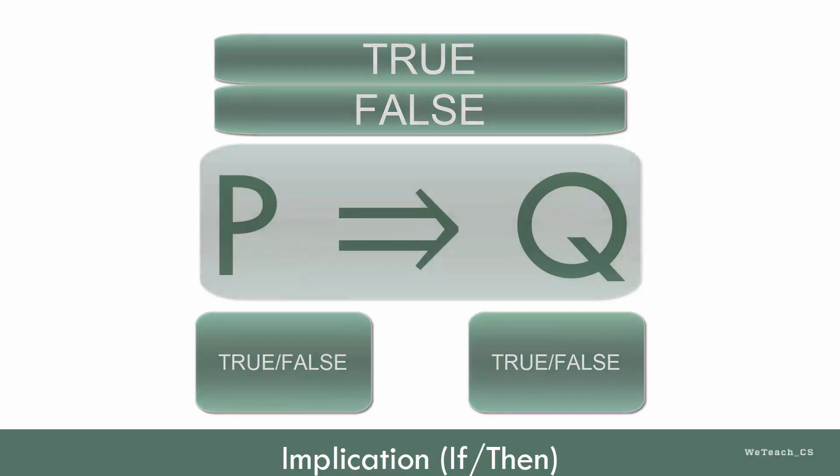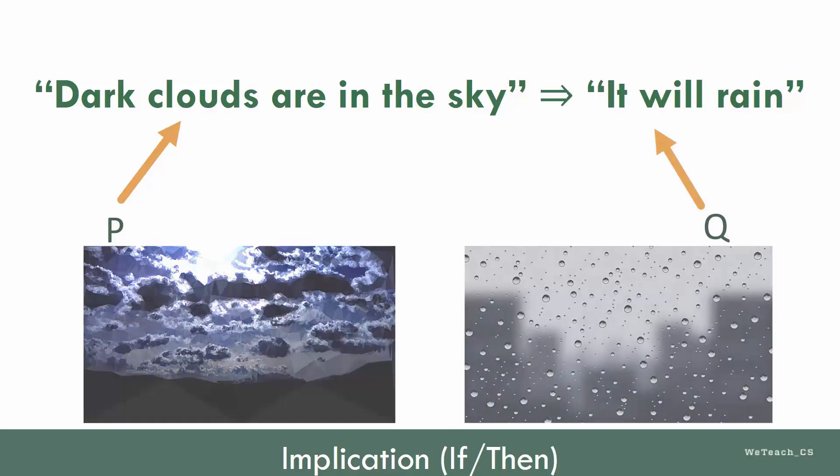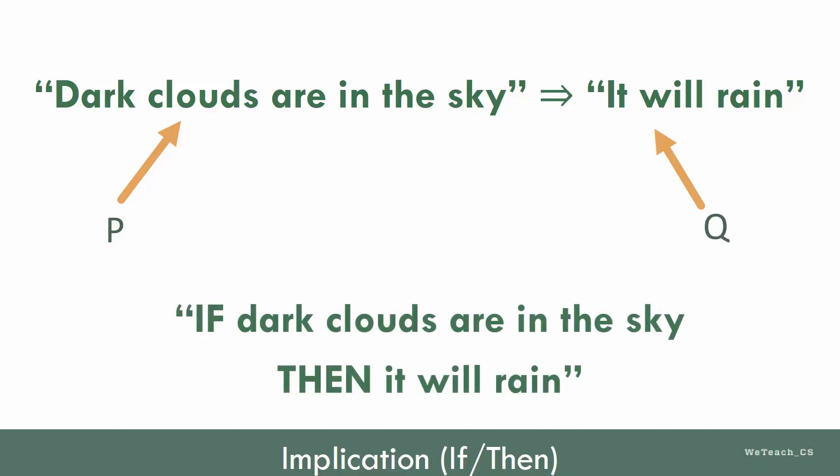Let's take a look at a simple example. This implication consists of two propositions, either of which could be true or false. The proposition P, dark clouds are in the sky, is a hypothesis or premise. And Q, it will rain, is a conclusion or consequence. This statement is read, if dark clouds are in the sky, then it will rain.